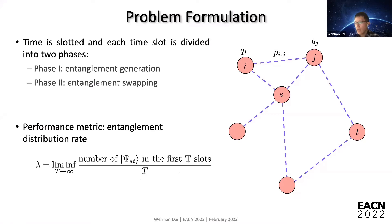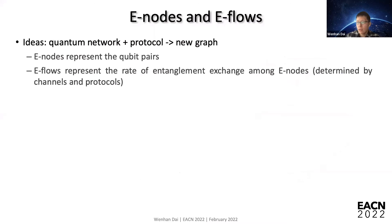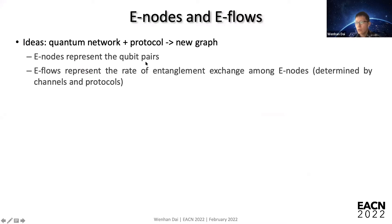How do we solve this problem? We consider a new graph consisting of e-nodes and e-flows. Given a quantum network and a protocol, you can transform this quantum network plus protocol into a new graph. In this new graph, e-nodes represent the qubit pairs in the quantum network, and e-flows represent the rate of entanglement exchange among e-nodes.